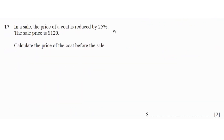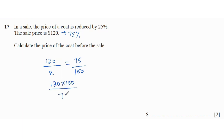In a sale, the price of a coat is reduced by 25%. The sale price is $120. Calculate the original price. If the sale price is 120, that means it's 75% of the original. So 120 over x equals 75 over 100. Cross-multiplying: 120 times 100 divided by 75 equals x, giving 12,000 over 75. Simplifying by dividing both by 5 gives x equals 160.